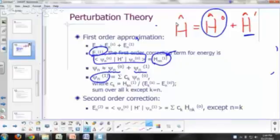It's just a sum. It's actually a linear combination of the zero-order wave functions, and the coefficient c sub k is given by this formula right here.